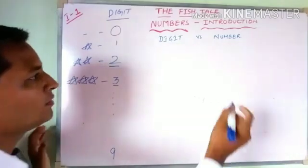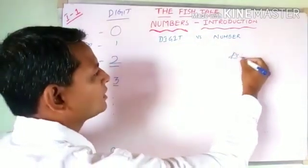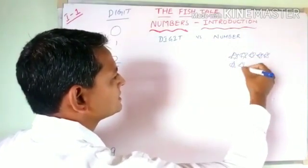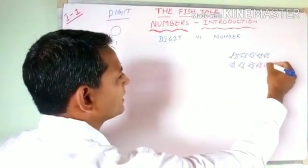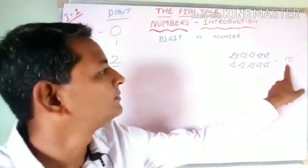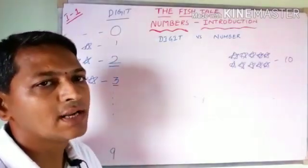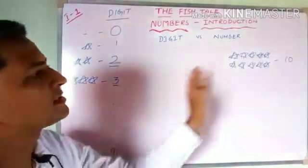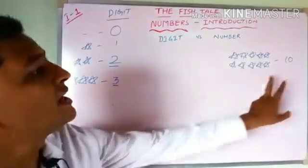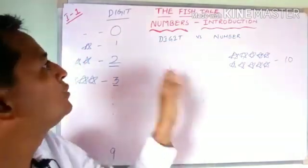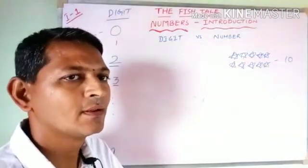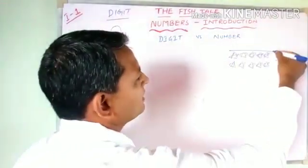Now, what is a number? Can you please help me count how many stars are there? One, two, three, four, five, six, seven, eight, nine — and then what is this? 10. This 10 is not called a digit; it is called a number. Why? Because it is made up of a combination of two or more digits.